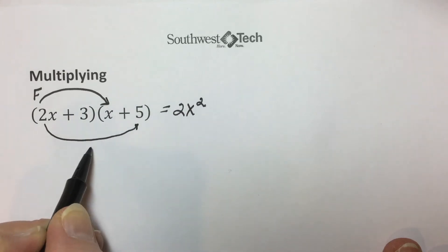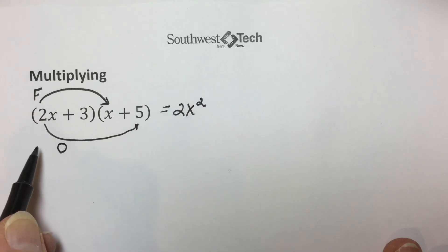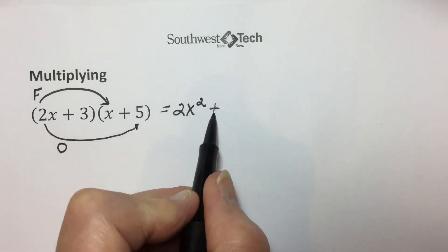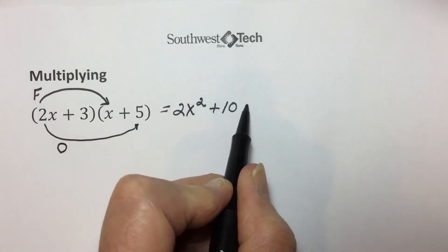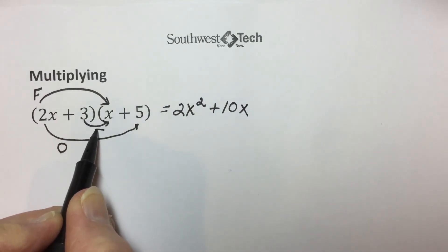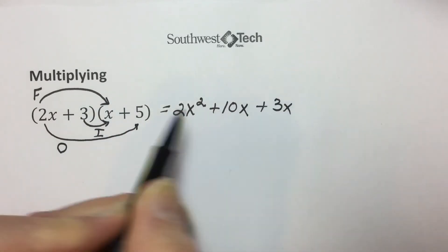Outside terms multiplied together, or the outer terms, 2X times 5 results in 10X. I for the inner terms multiplied together, positive 3 times X, positive 3X.